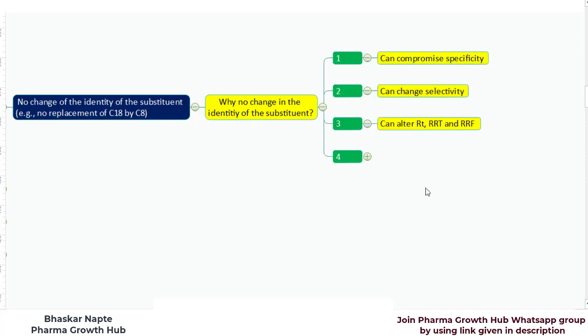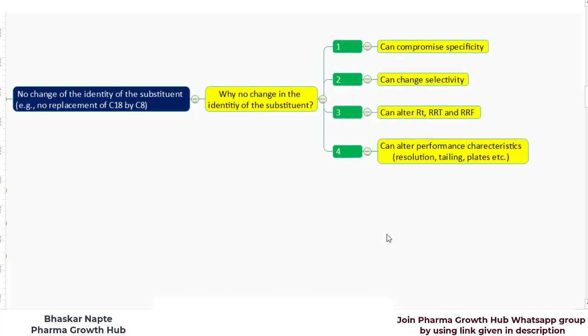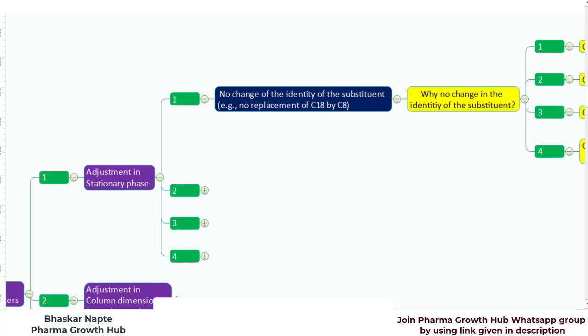Point number 3: a change in the substituent can also alter the retention time, relative retention time, and even the relative response factor (RRF). Point number 4: this change can also alter performance characteristics like resolution, tailing, and plate counts. Because of these reasons, USP has not allowed replacement of any substituent.